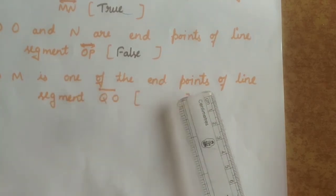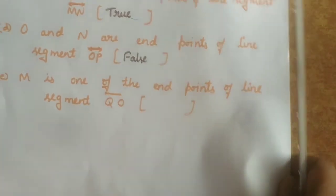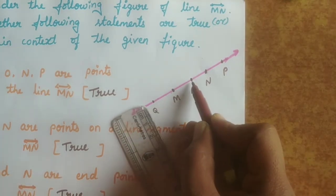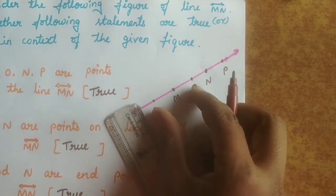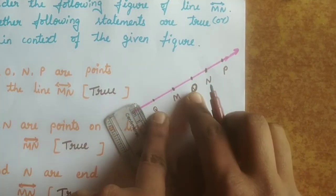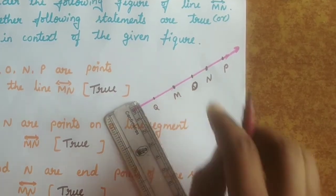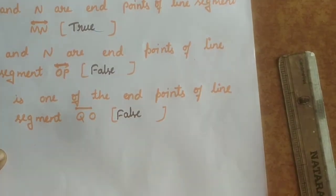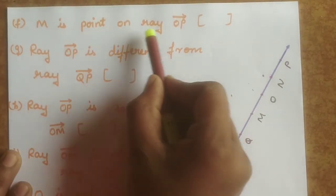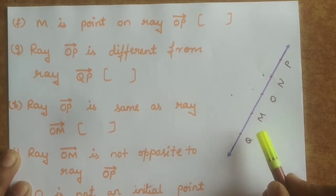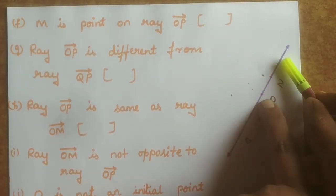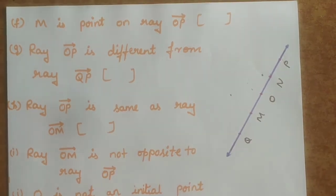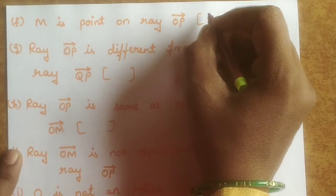Statement E: M is one of the end points of line segment QO. For line segment QO, the end points are Q and O. So M cannot be an end point — this statement is false.